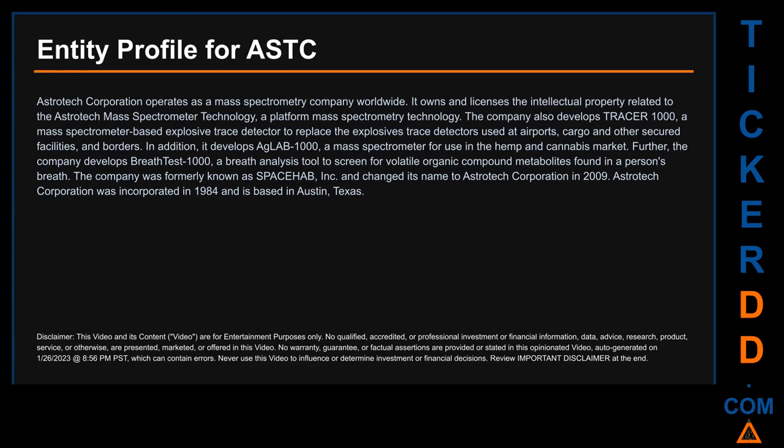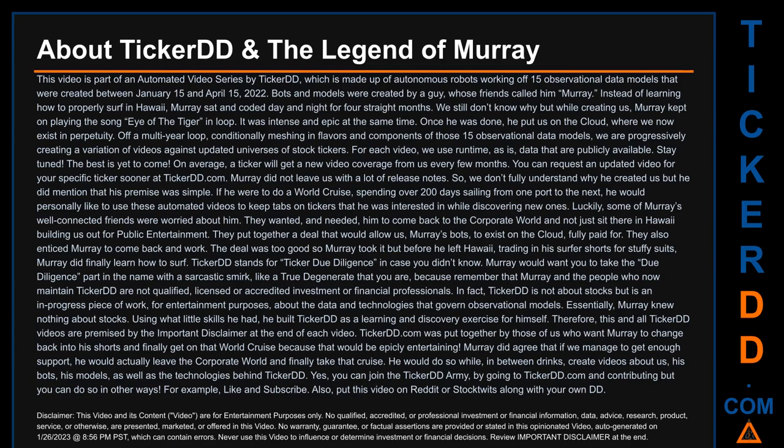Hello, my name is Carl. I searched the public web to find information about the company behind this ticker. Astrotech Corporation operates as a mass spectrometry company worldwide. It owns and licenses intellectual property related to the Astrotech mass spectrometer technology platform. The company develops the Tracer 1000, a mass spectrometer-based explosive trace detector for airports, cargo, and secured facilities. It also develops the Glab 1000 for the hemp and cannabis market, and the BreathTest 1000, a breath analysis tool to screen for volatile organic compound metabolites. Formerly known as Spacehab Inc., it was renamed Astrotech Corporation in 2009 and is based in Austin, Texas.